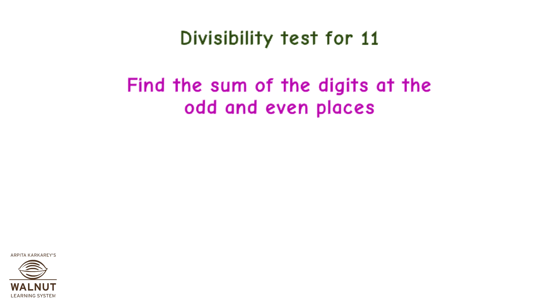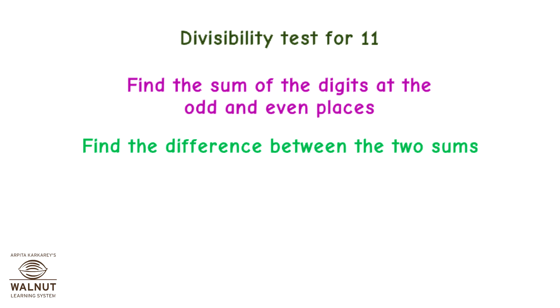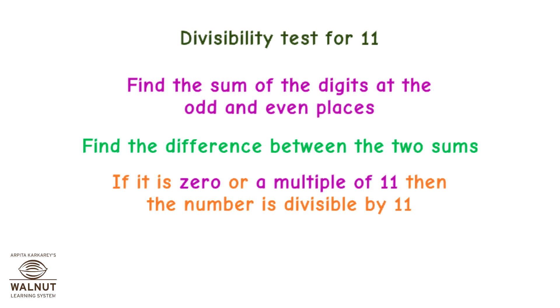Divisibility test for 11: find the sum of the digits at the odd and even places. Find the difference between the two sums. If it is 0 or a multiple of 11, then the number is divisible by 11.